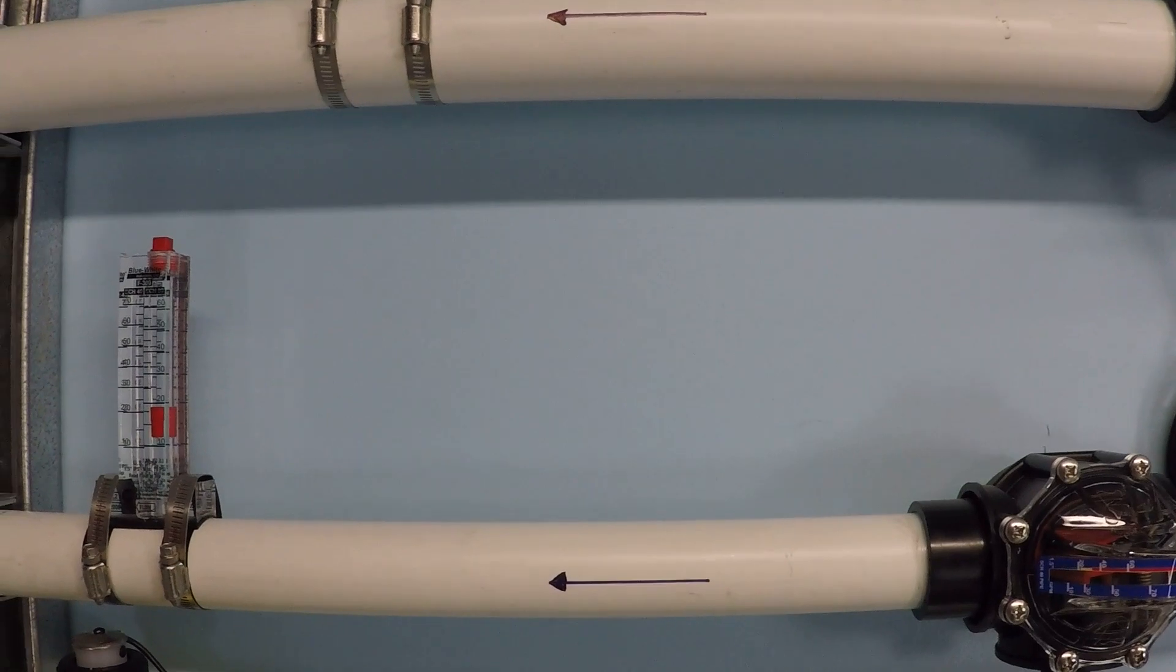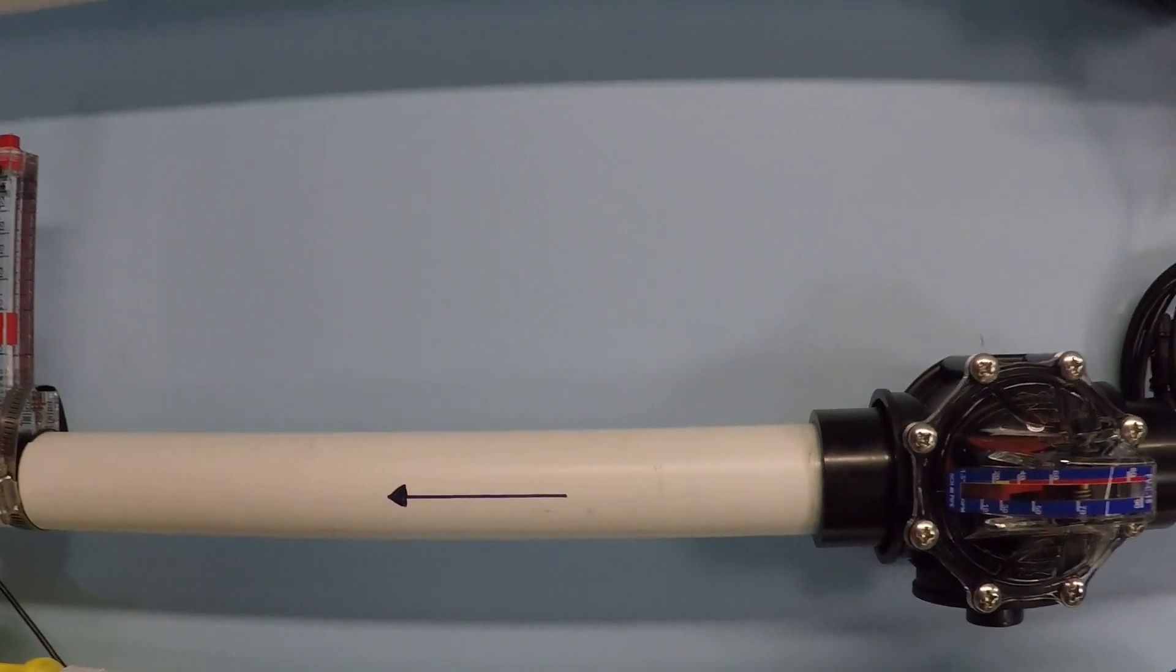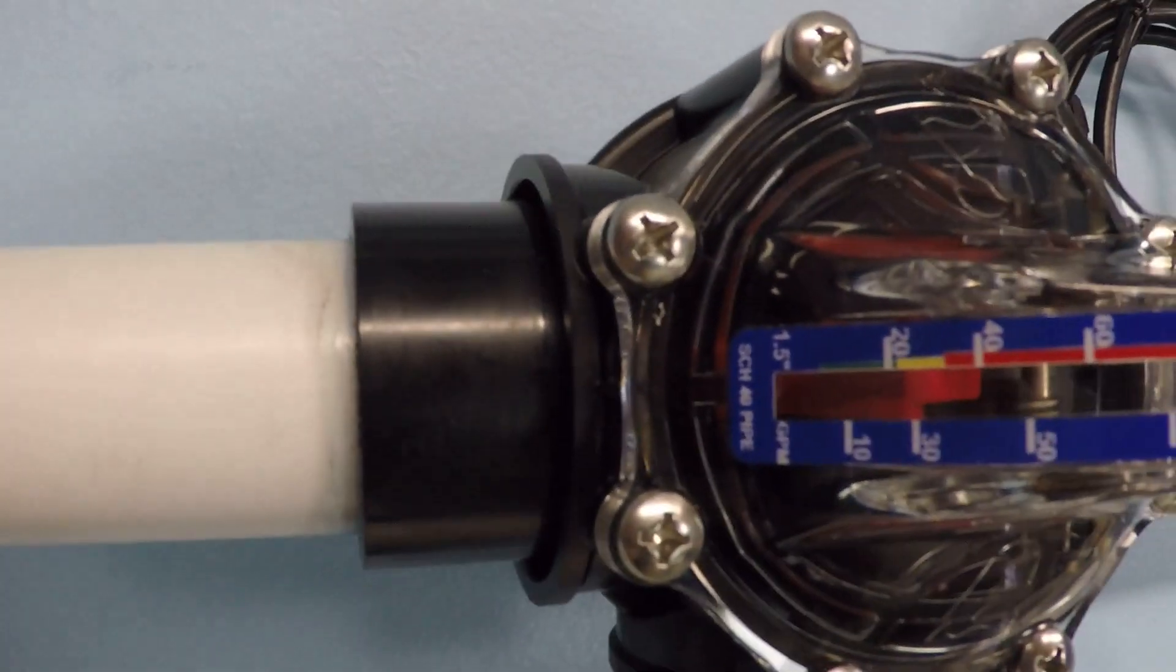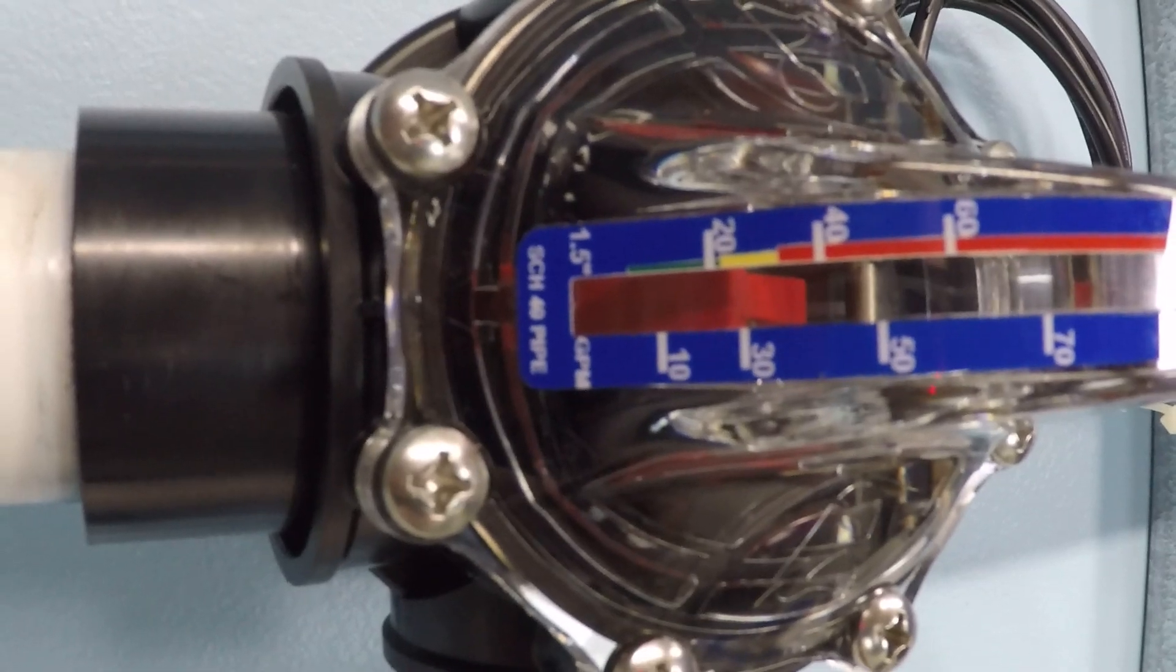Let's take a look at both of them to see how we would read how much flow is happening right now in this system. Do you see how there's kind of a red diving board platform?